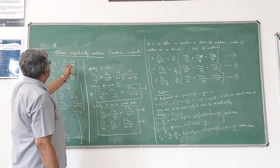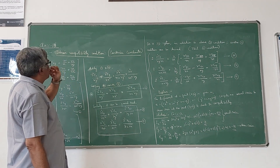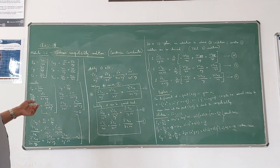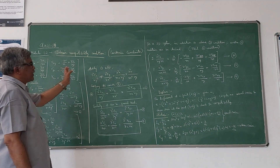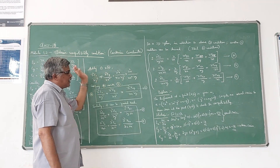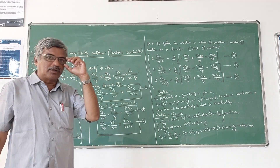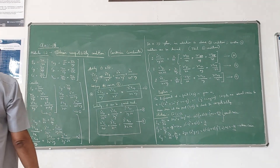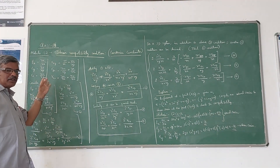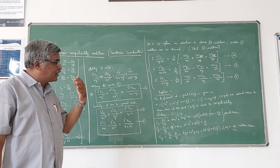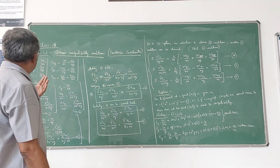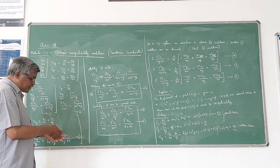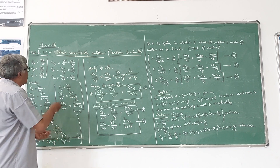In this class we will discuss about strain compatibility conditions in Cartesian coordinates. We will cover both two-dimensional and three-dimensional coordinate systems. We have learned from the definition of stress-strain displacement relations, and these are the six relationships that exist from the earlier class.